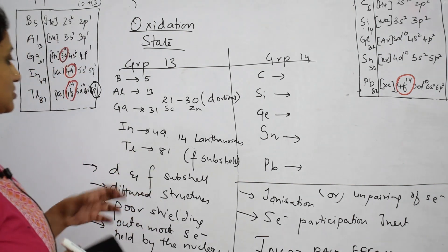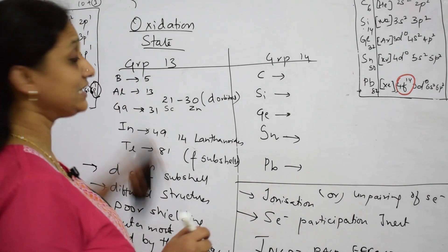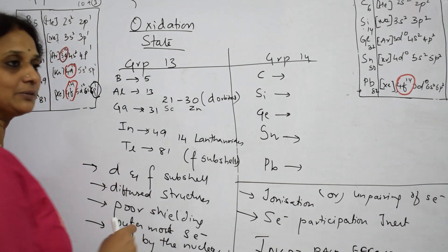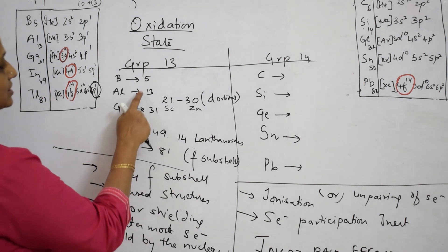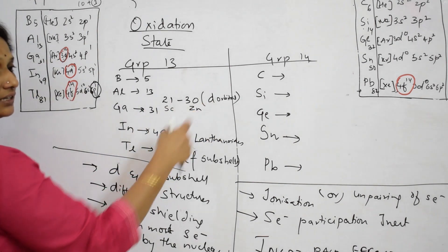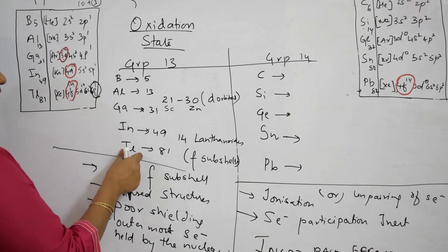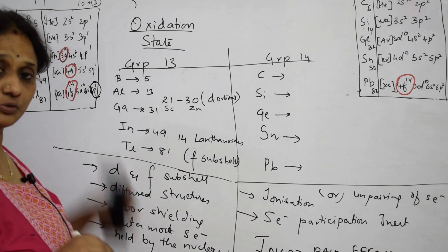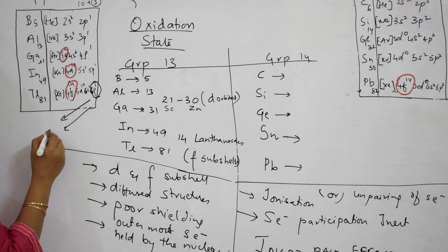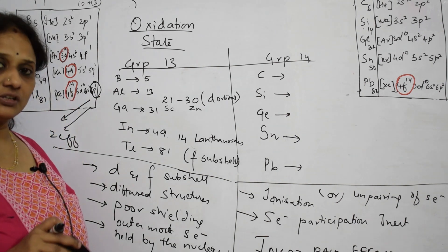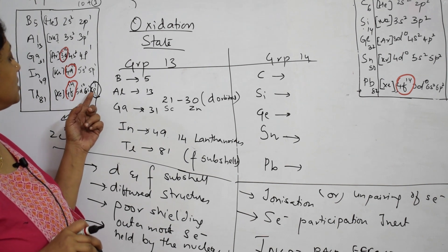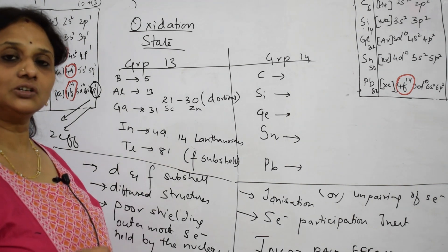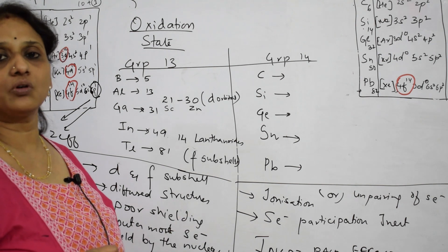Let us redo this. Why does the oxidation state change? When we go down group 13, the +1 oxidation state is more preferred than +3. Oxidation state decreases as we go down the group. The reason is the inert pair effect. Between aluminium and gallium, the 3D subshell enters, and between indium and thallium, the 4F subshell enters. Both D and F have diffused shapes and do not protect or shield the outermost electrons, so the effective nuclear charge on the outermost shell increases. Thallium has 6s2 6p1 — it should show +3, but the nucleus holds the S electron tightly, so it cannot participate in bonding. This reluctance of the S electron to participate in bonding is called the inert pair effect.